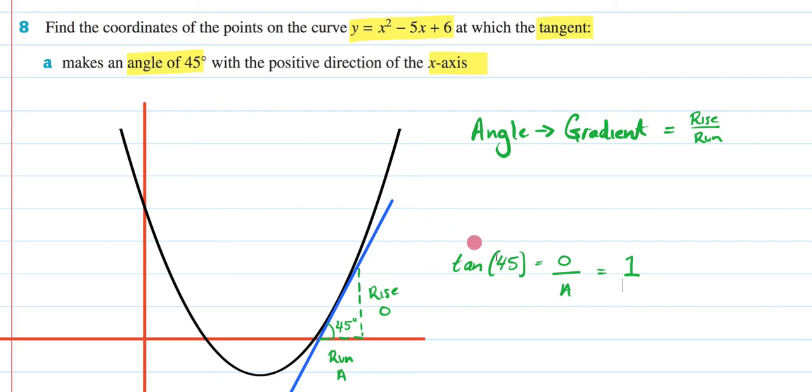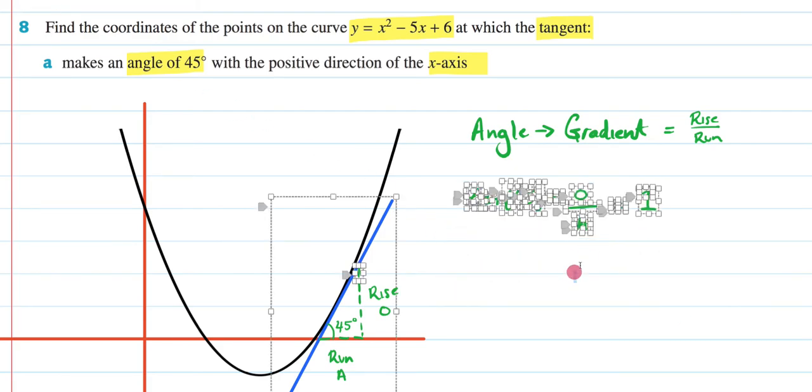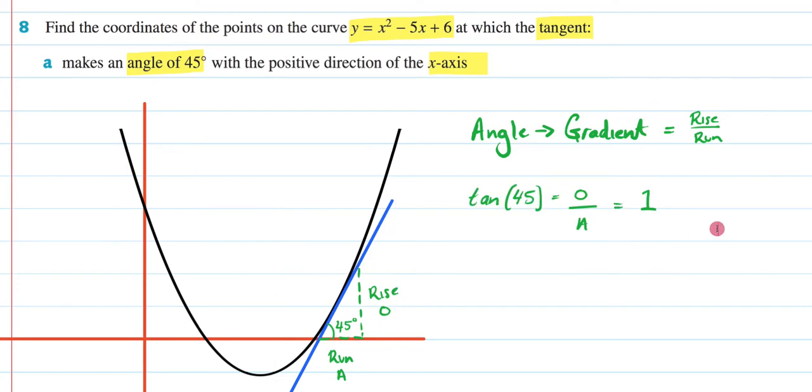And hopefully, I've kind of proven to you that we've turned an angle into a gradient. So, it's really just a gradient of 1, which is fantastic now because we can deal with this. The next thing that we're going to do is come back to our question. We're going to take this and we're going to figure out dy/dx. We're going to differentiate it. So, it's going to be 2x - 5.